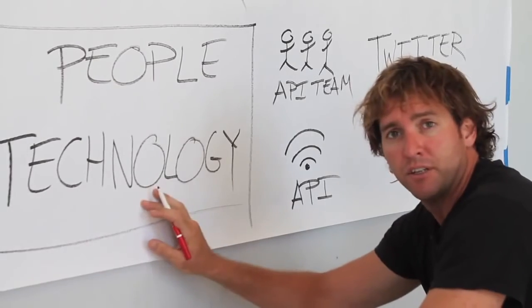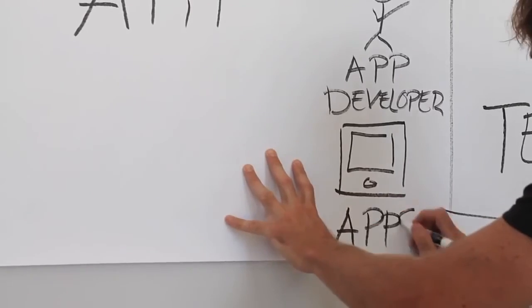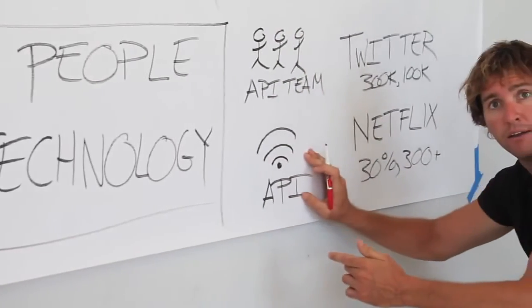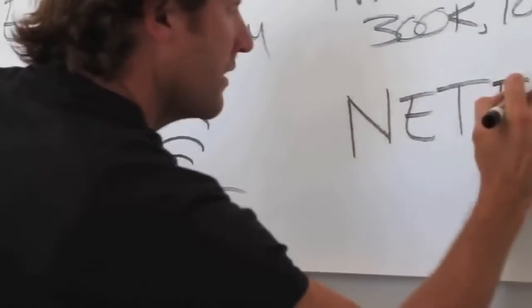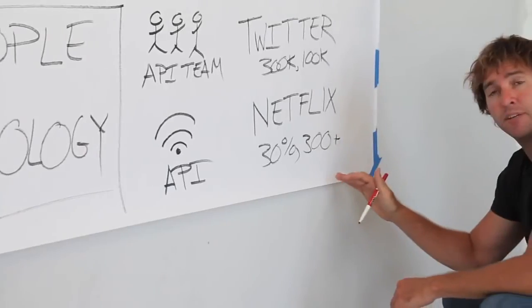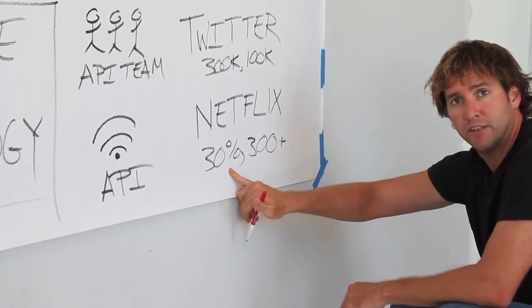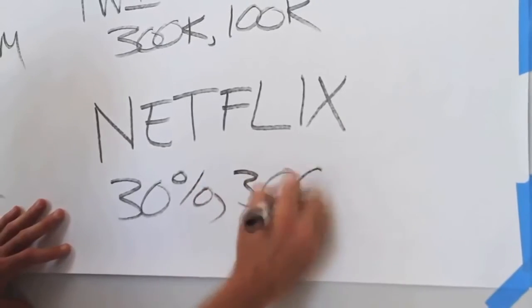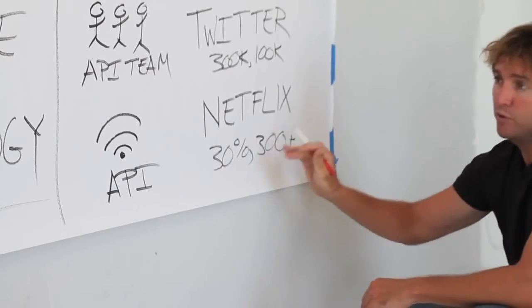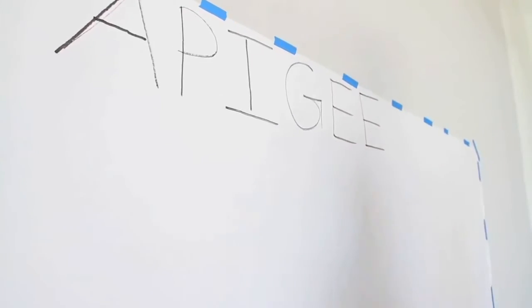The second major component of the platform is the technology. It's about connecting the apps with the API. The leading company in the world for this is Netflix. During prime time in the US, 30% of all web traffic is from Netflix. They have over 300 partner devices driving their apps and they use the Apigee technology to do this.